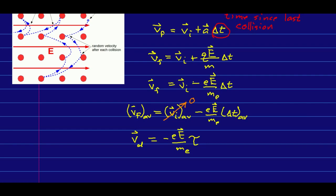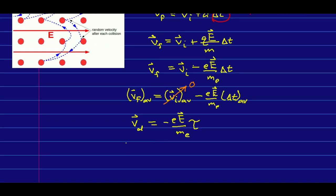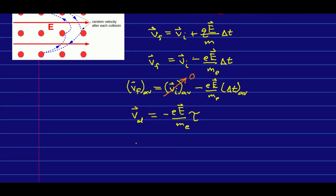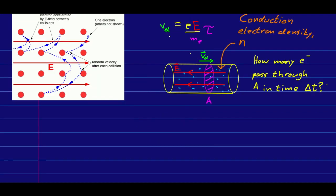Normally, we don't really care about the vector nature of this. We know which way the electrons are going to drift. And so, we will normally just talk about the magnitude of the drift velocity. So, now we have an expression for the average speed of the electrons in the metal. And let's suppose that we know the density of conduction electrons. In other words, how many conduction electrons there are per unit volume in the metal. And we'll call it n.